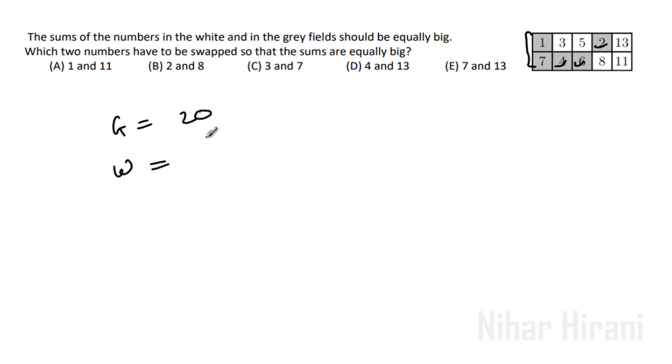What about white? 3 plus 5 is 8, 8 plus 8 is 16, 16 plus 11 is 27, 27 plus 13 is 40.